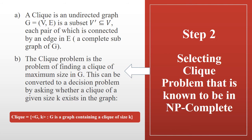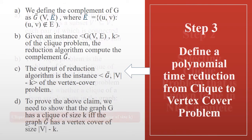The clique problem is to find a clique of maximum size in G. This can be formulated as a decision problem: CLIQUE = {⟨G, k⟩} where graph G contains a clique of size k. Step three: we define a polynomial time reduction from clique to vertex cover, starting by computing the complement of an undirected graph G.